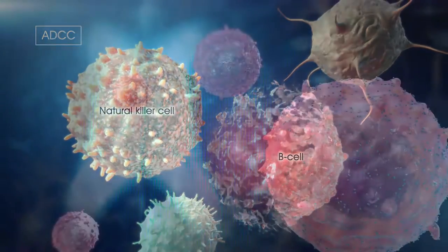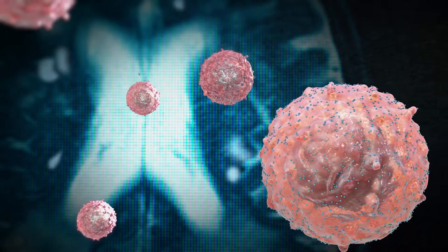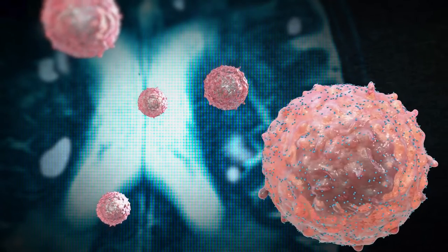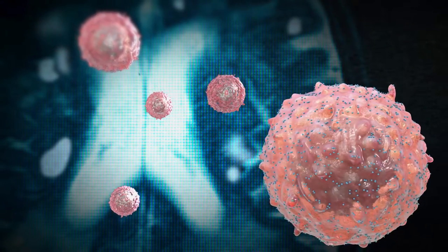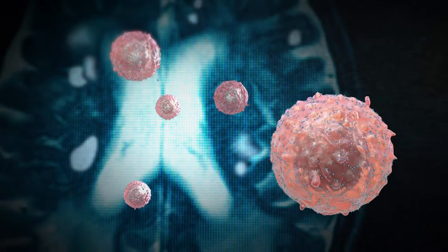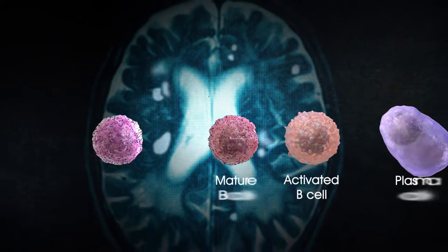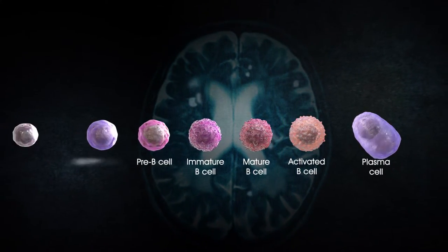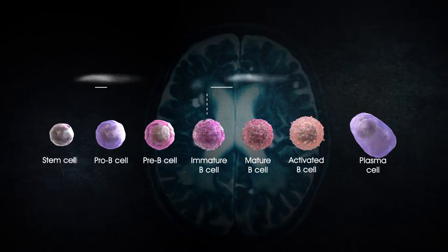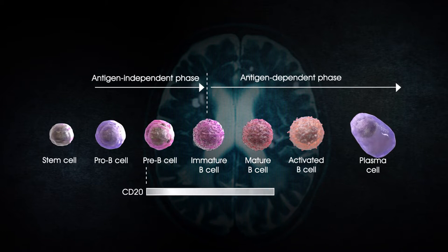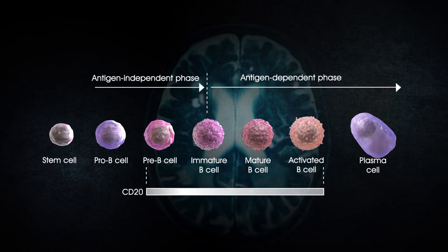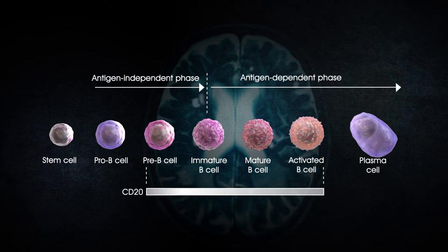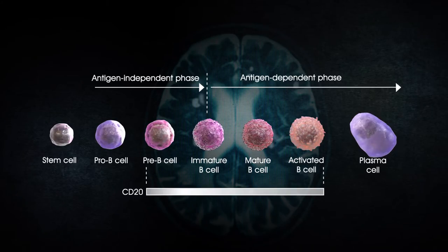Effects on relapsing MS of CD20 therapy are robust, and CD20 therapy is the first approach that has shown partial benefit for primary progressive MS. Because the CD20 antigen is not expressed on stem cells or plasma cells, CD20 treatment preserves B-cell reconstitution by stem cells, and also preserves pre-existing immunity mediated by long-lived plasma cells.